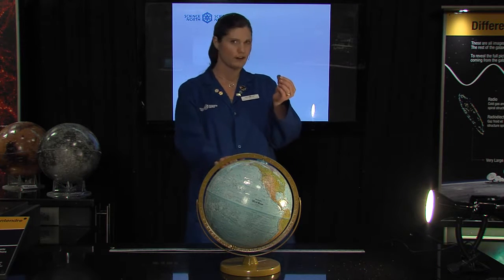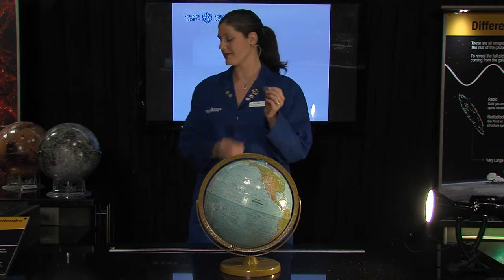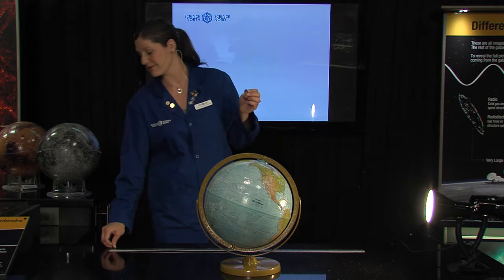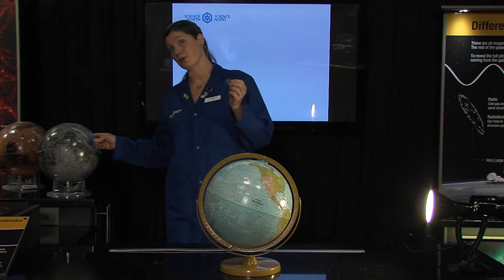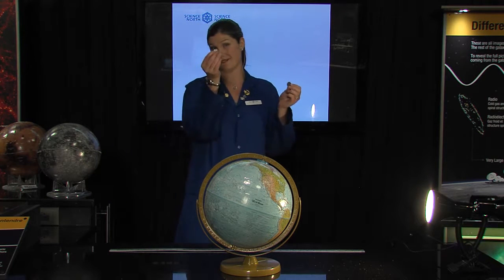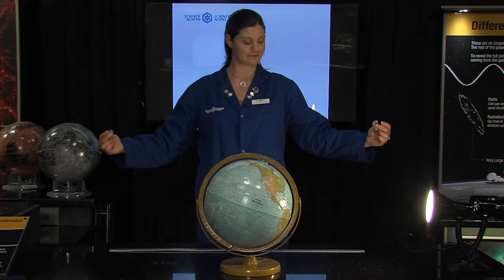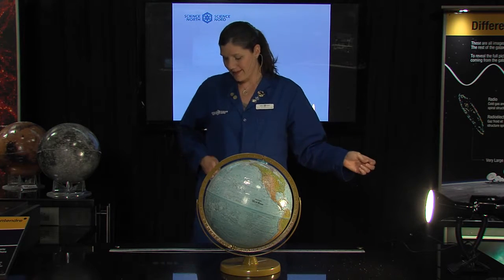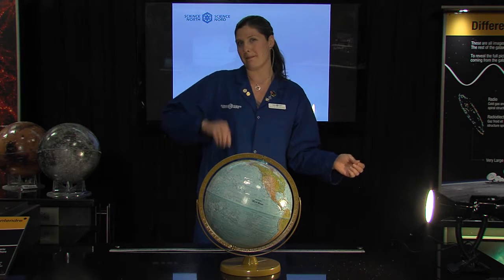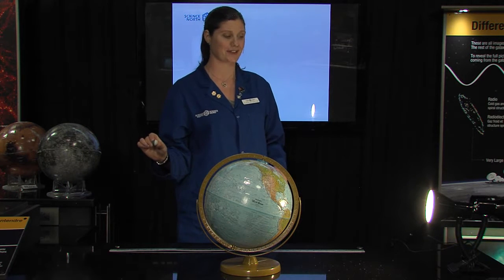If the Earth were the size of this quarter, the Moon would be the size of this dime, and they would be a meter apart. So my Moon is way too small, and I'm going to hold it way too close to Earth. Same for the Sun, but it works.